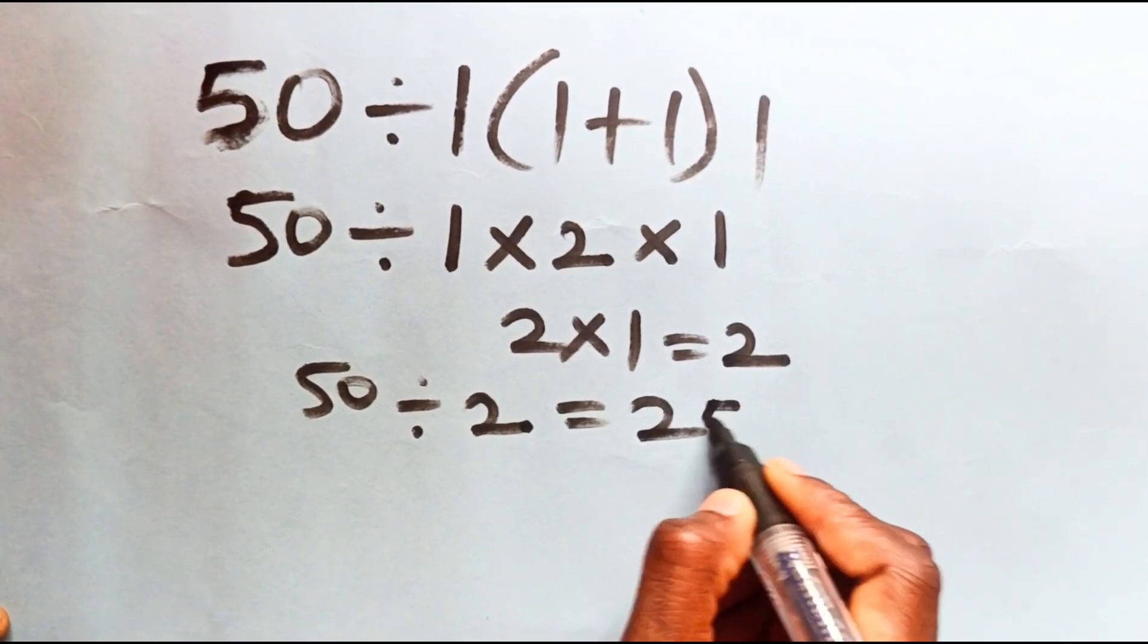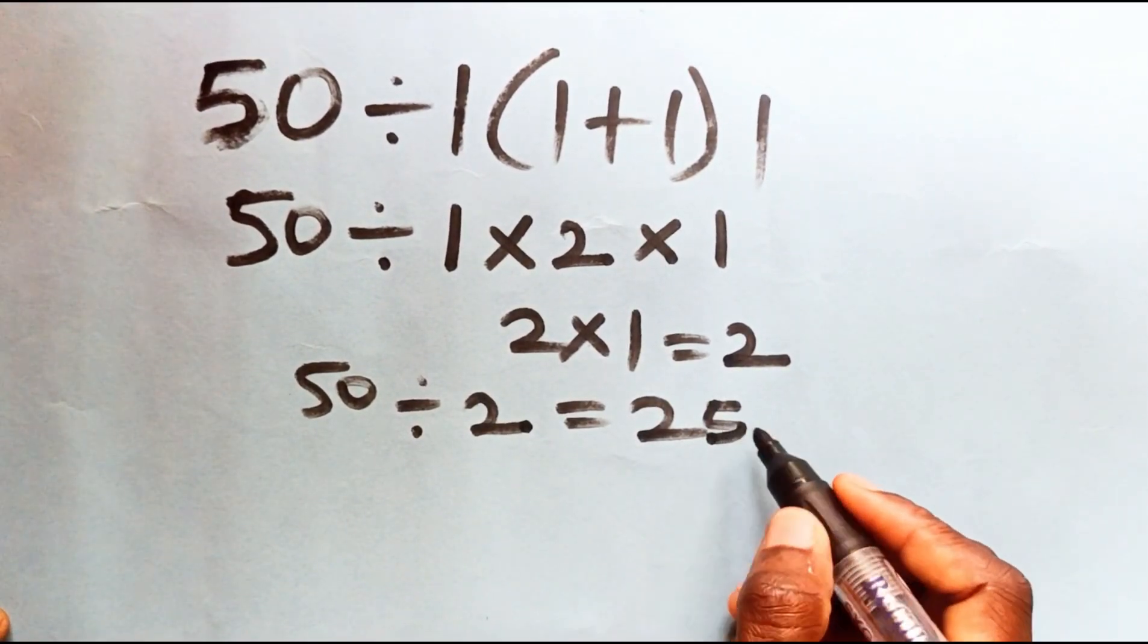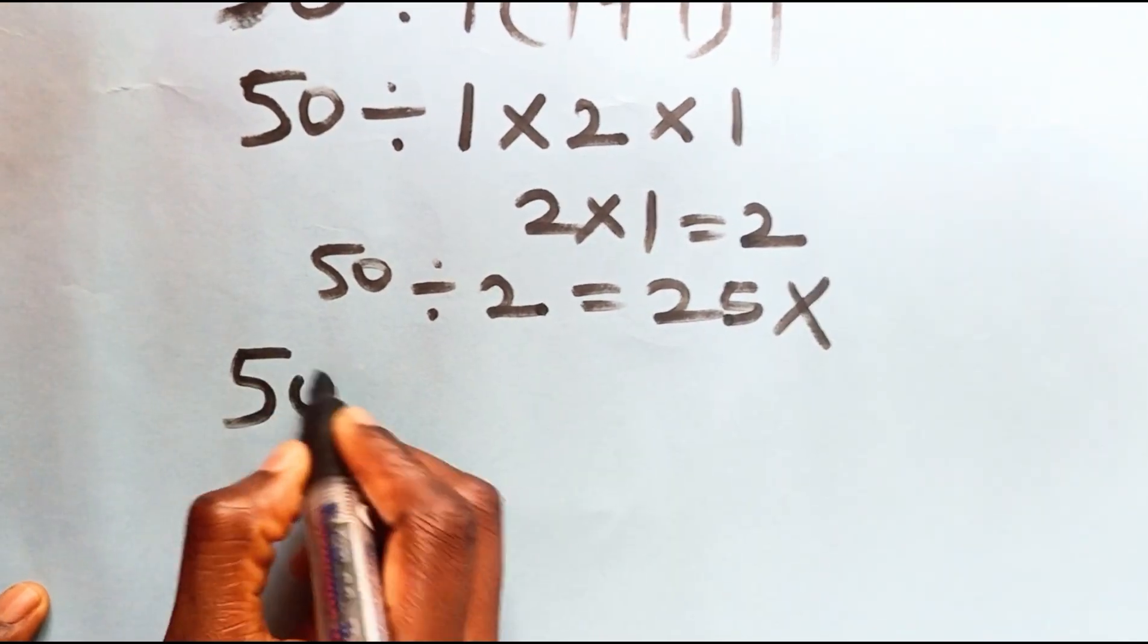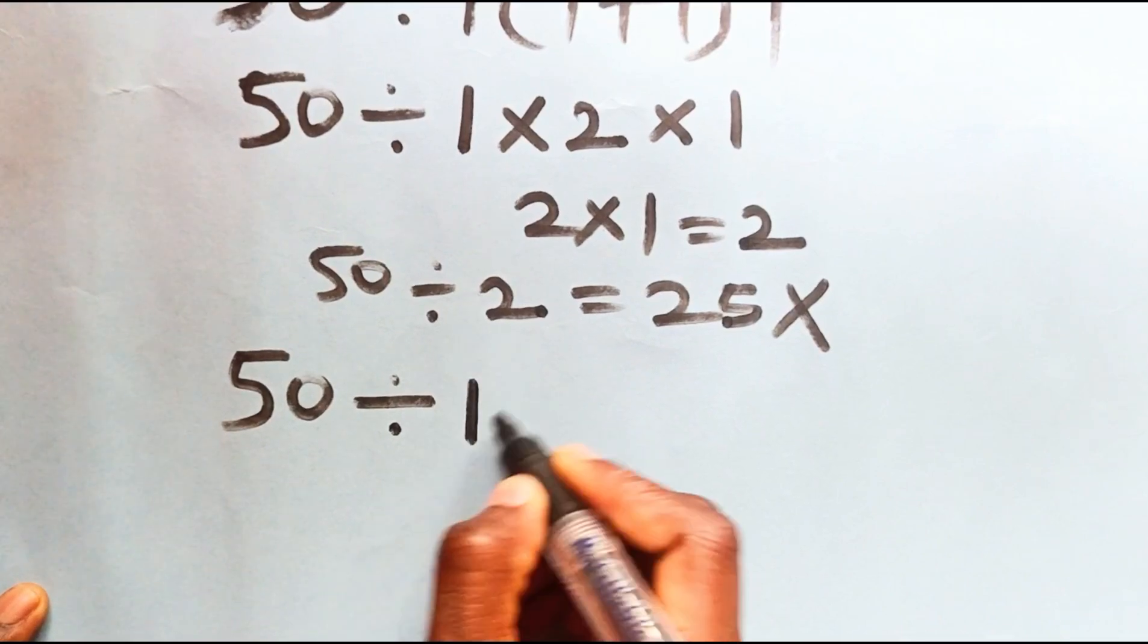This answer is not correct. Now let's look at the question again: 50 divided by 1 into bracket 1 plus 1 close bracket 1.